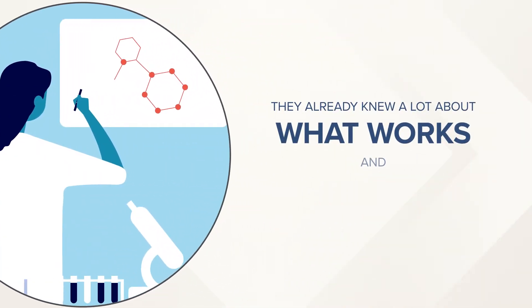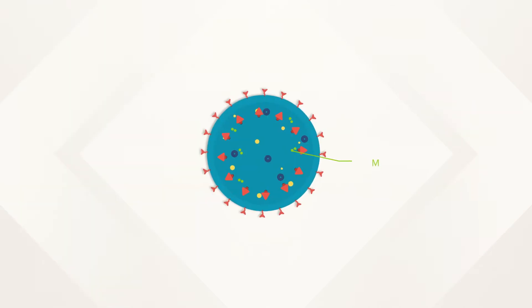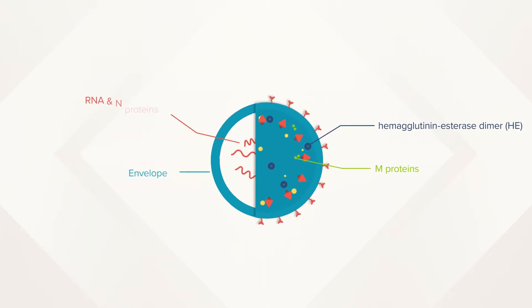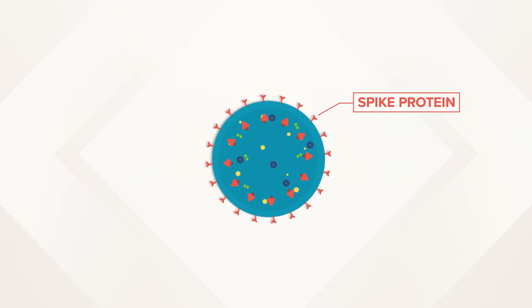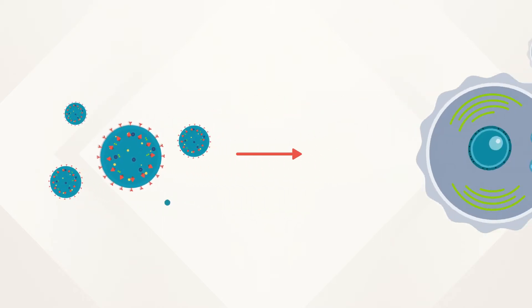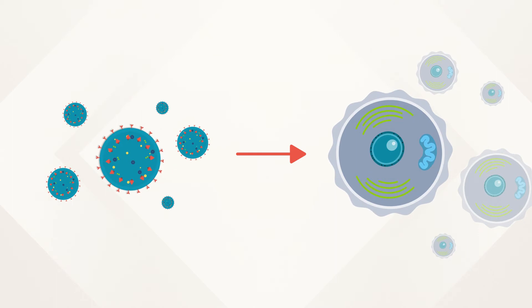They already knew a lot about what works and what doesn't. Scientists had learned how this family of viruses behaves, their biology, and the so-called spike protein, which allows the virus to enter our cells and infect us.